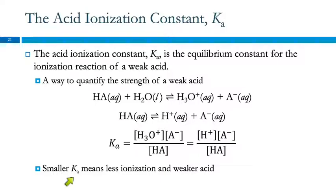So if Ka is small, that means that the reaction does not proceed to the right very far. It does not ionize very much and it's a weaker acid. A larger Ka ionizes more completely and is stronger.